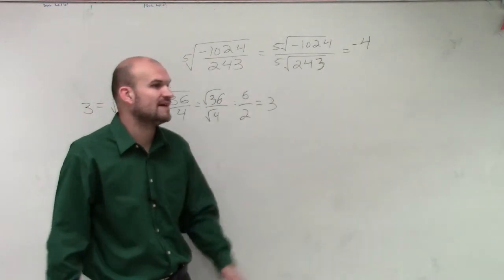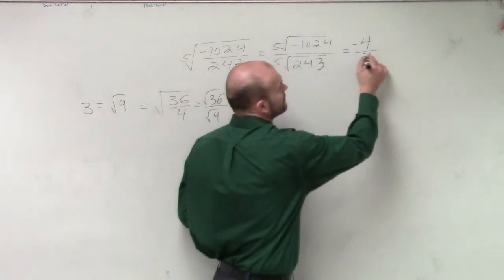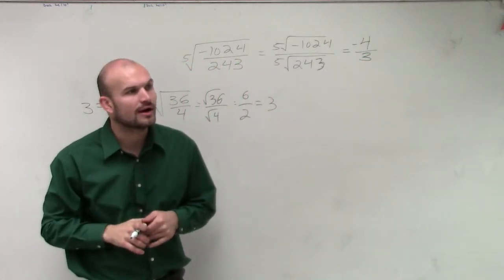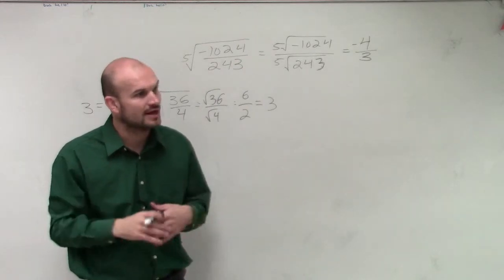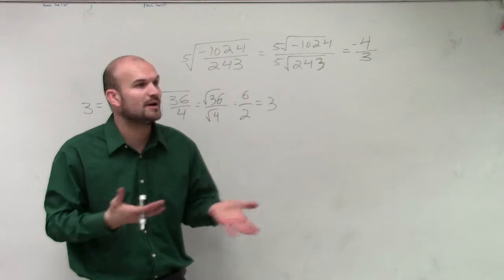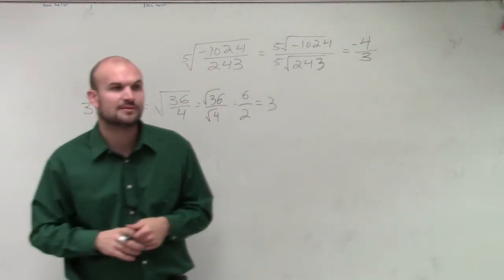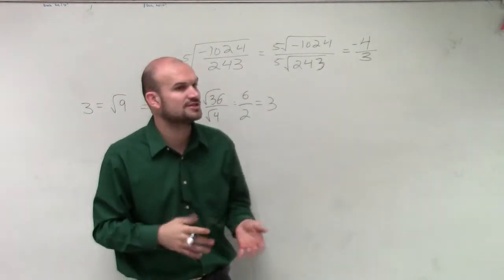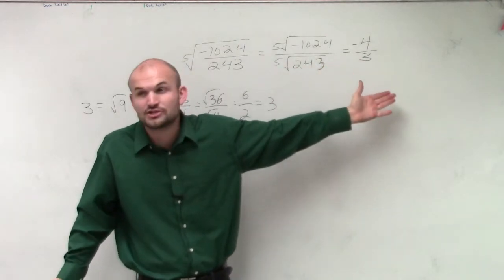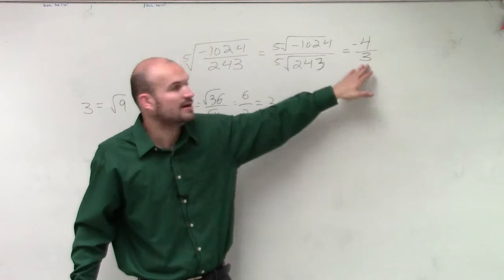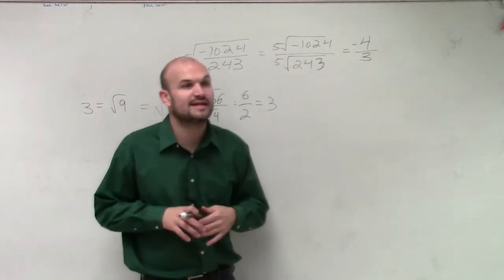And then what number multiplied by itself five times gives us 243? The answer is 3. One thing you can do is just plug in your numbers: 3 times 3 times 3 times 3 times 3. Or negative 4 times negative 4, and keep working backwards. Do a guess and check — try 2, then 3, then 4, then 5. Once you get to 3, you already have your answer. So the final answer is negative 4 thirds.